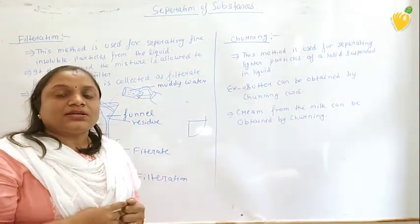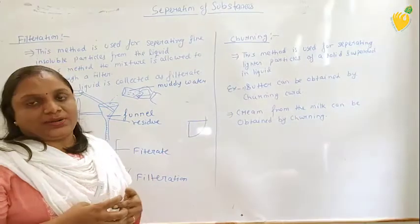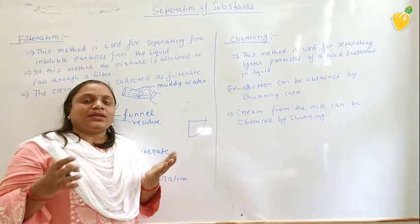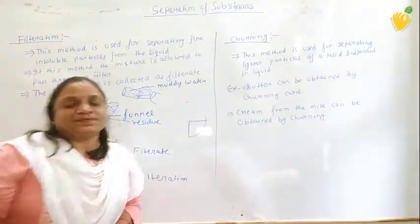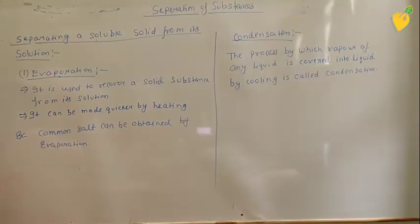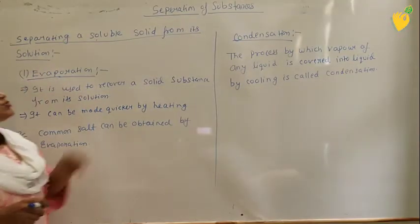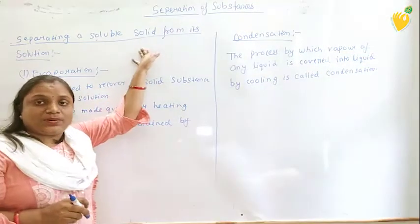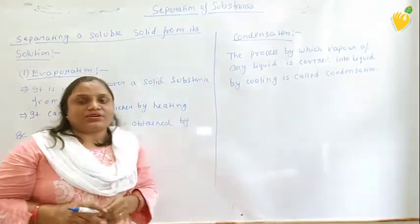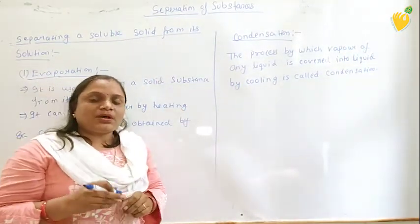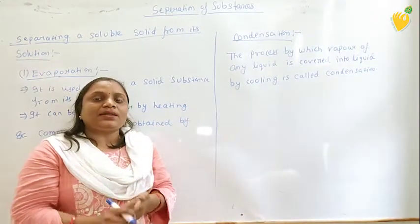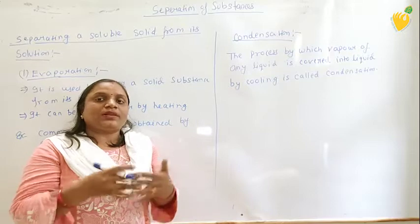Now I will tell you about solids which are soluble in liquid. The method of separation of a mixture of solid and liquid in which the solid is soluble in liquid — for example, salt is highly soluble in water, and sugar is soluble in water. Now I will tell you how to separate a solid which is soluble in a liquid.